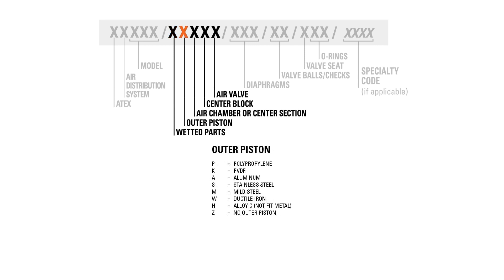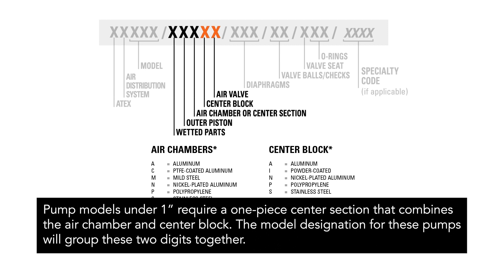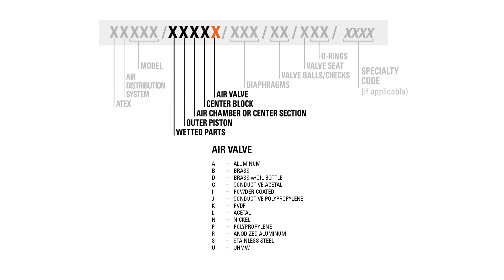The second digit of this section denotes the outer piston option for the pump. In most cases, this will match the wetted parts material of construction. The pump may also not have an outer piston if the diaphragm is integral piston, such as chemfuse or purefuse diaphragms. The third digit denotes the material for the air chamber and the fourth digit denotes the material of the center block. Pump models under one inch require a one-piece center section combining the air chamber and center block, so the model designation groups these two digits together. The final digit in this section denotes the material of the air valve, and some air valve materials are specific to the air distribution system used.